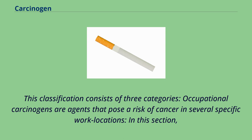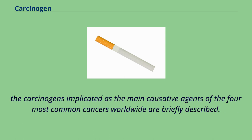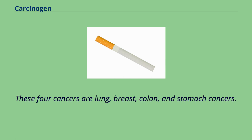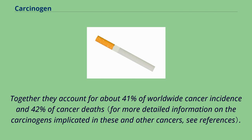Occupational carcinogens are agents that pose a risk of cancer in specific work locations. The carcinogens implicated as the main causative agents of the four most common cancers worldwide are briefly described. These four cancers — lung, breast, colon, and stomach — together account for about 41% of worldwide cancer incidence and 42% of cancer deaths.